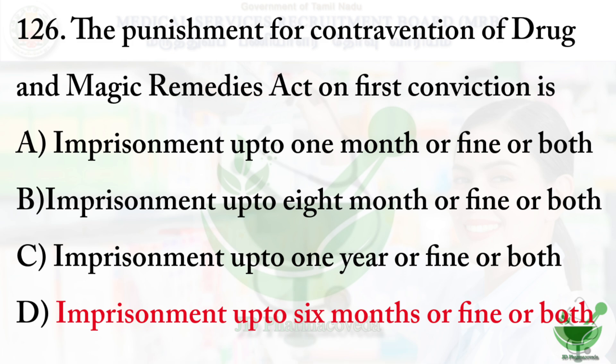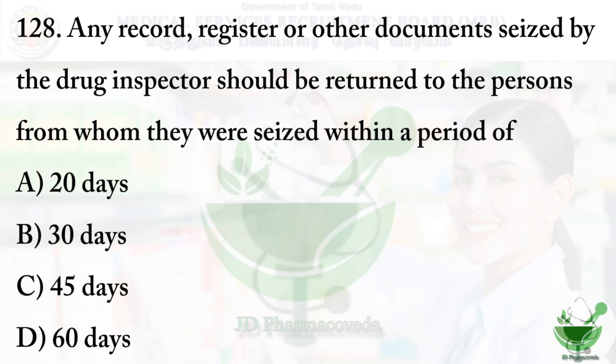Question 127: Drugs Technical Advisory Board consists of how many ex officio members? Option A: 5, option B: 2, option C: 8, option D: 4. The right option is option C, 8. Question 128: Any record, register, or document seized by a drug inspector should be returned to the person within — Option A: 20 days, option B: 30 days, option C: 45 days, option D: 60 days. The right option is option A, 20 days.